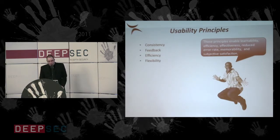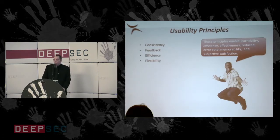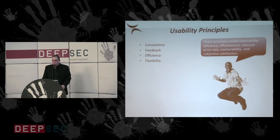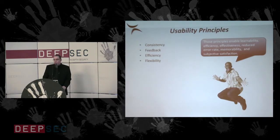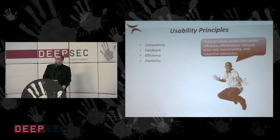The next principle is flexibility. From the security domain, flexibility could mean you build a laptop and provide more than one means for authentication. My laptop only has USB plus password and user ID. It does not have a smart card reader or fingerprint reader. Such a system would add to flexibility as the user would have more than one way to accomplish the task of authentication, which adds to usability.